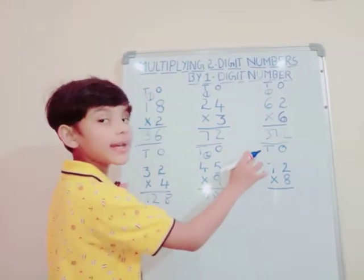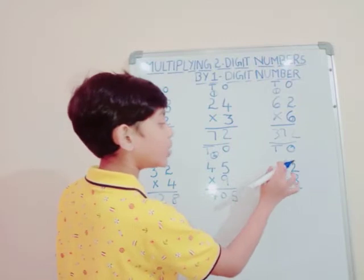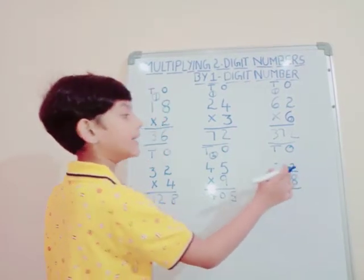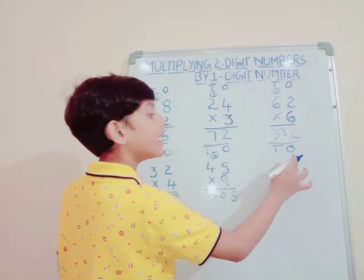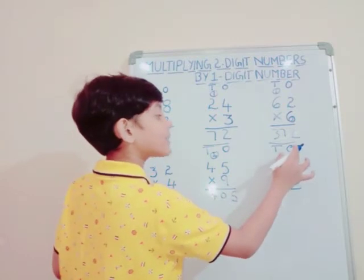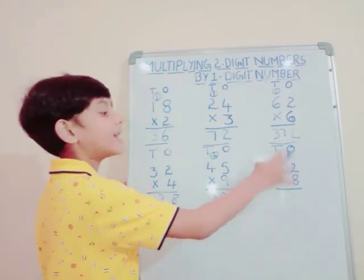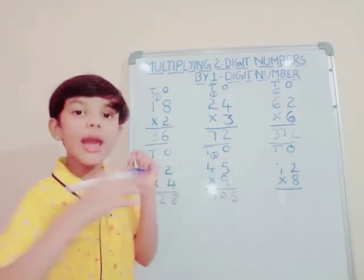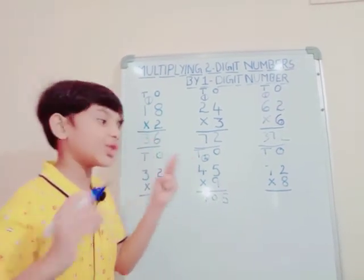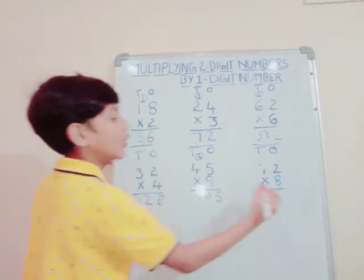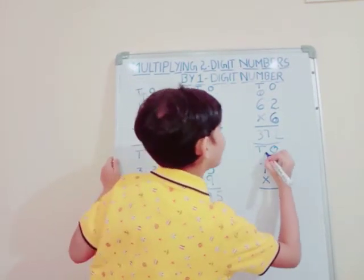Now our sixth sum: 72 into 8. First of all, we should multiply the 1's digit number by 8. That is: 8×1=8, 8×2=16. We should write 6 and carry up 1.